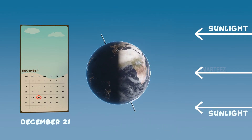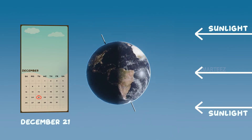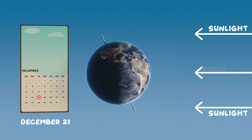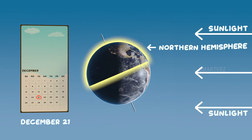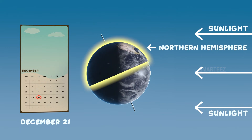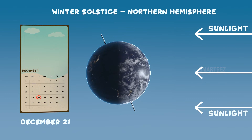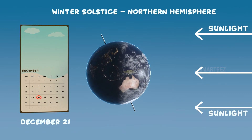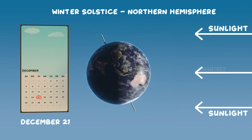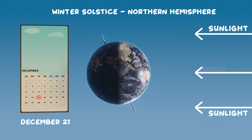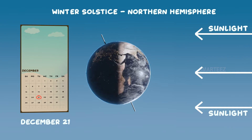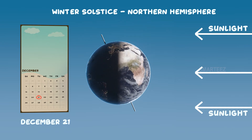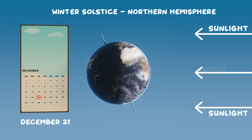Well, it's December 21st today. The winter solstice usually occurs on this day in the northern hemisphere. What is winter solstice? Winter solstice is the time when the day is the shortest and the night is the longest.